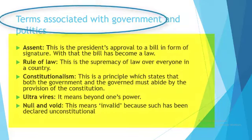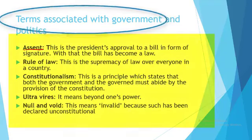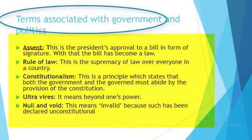Then we have assent. Assent is the signature of the executive organ of government in a presidential system. The president's approval of any law enacted by the legislature is referred to as assent.